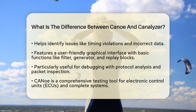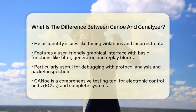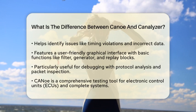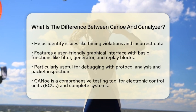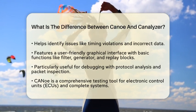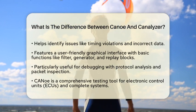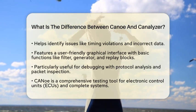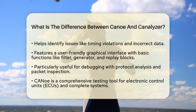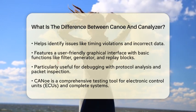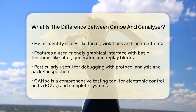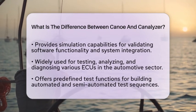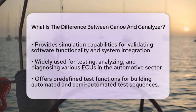On the other hand, CANoe is a comprehensive testing tool that helps engineers test entire electronic control units, ECUs, or complete systems. It provides simulation capabilities for ECUs, allowing engineers to validate software functionality and system integration. CANoe is widely used in the automotive industry for testing, analyzing, and diagnosing various ECUs.